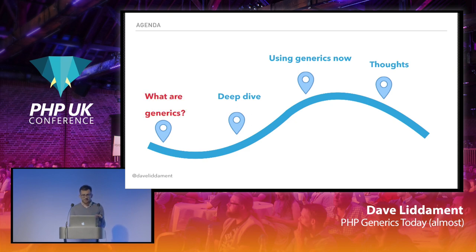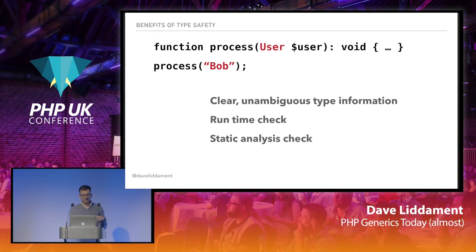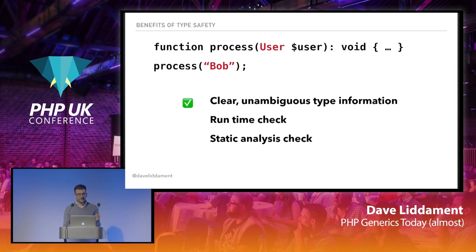So what are generics? Just before we do generics, I want to talk very briefly about the benefits of type safety. In the context of this talk, there are three benefits. The first is that by having that type declaration of User, it gives other developers clear, unambiguous type information. We know if we're going to call process, we have to call it with a User object.